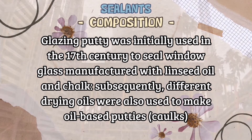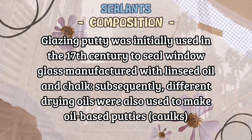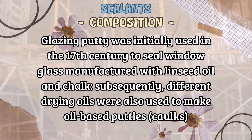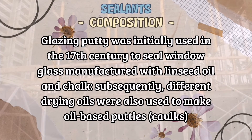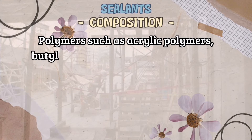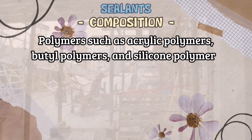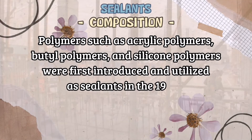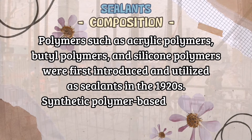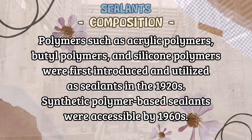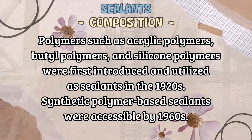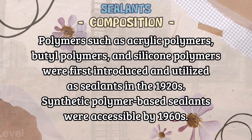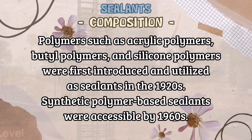Subsequently, different drying oils were also used to make oil-based putties. Polymers such as acrylic polymers, butyl polymers, and silicone polymers were first produced and utilized as sealants in the 1920s. Synthetic polymer-based sealants were commercially accessible by the 1960s.